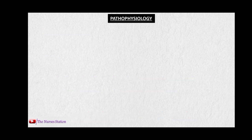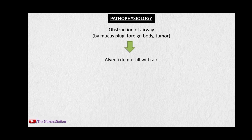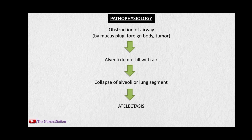The pathophysiology of atelectasis is very simple. First, there is obstruction of the airway either by a mucous plug, a foreign body, or a tumor. This does not allow air to fill the alveoli, and ultimately the alveoli deflate and produce collapse of the alveoli or the lung segment — this is called atelectasis.